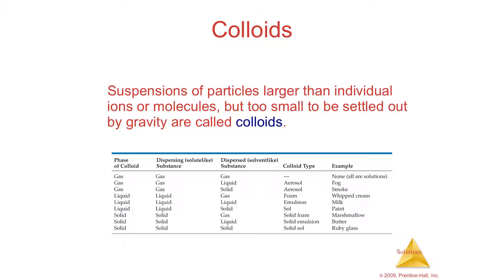Colloids are intermediate in size - we're talking about 5 to 1000 nanometers, which is at the atomic level, almost as big as a cell. There are different types of colloids. Aerosols are either a gas with a liquid or a gas with a solid - smoke or fog are examples. Foams are gas and liquid - if you whip air into whipped cream, you make bubbles and make it light and fluffy; that is a foam.